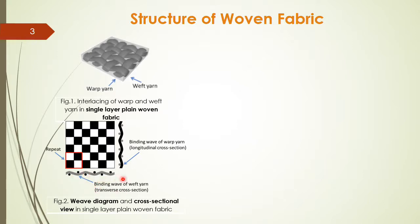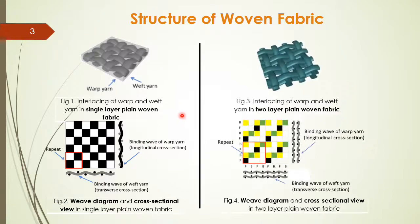Along the transverse cross section, you can see the binding wave of weft yarn, and along the longitudinal cross section, you can see the binding wave of warp yarn. It is necessary to understand the transverse and the longitudinal cross section.